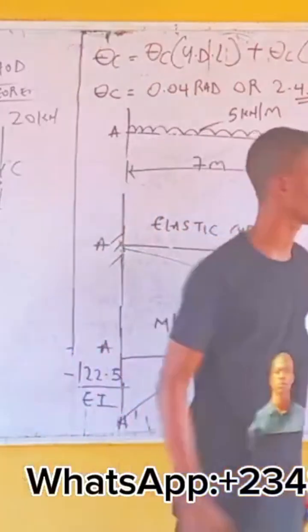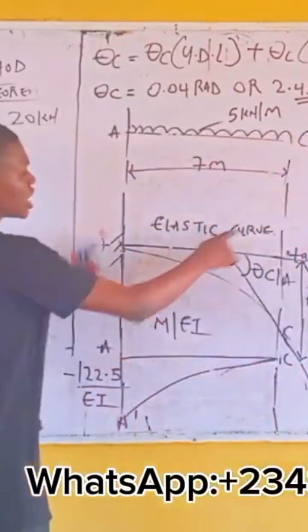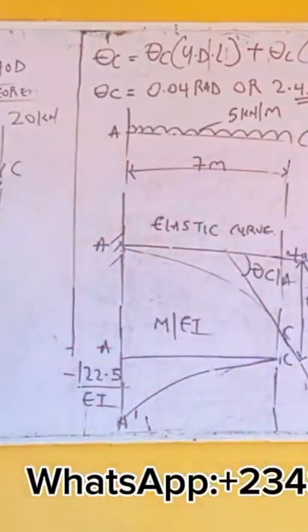Similarly to this place too, the vertical deviation is Tc to A. Now, I've gotten the area already. Meaning that Tc to A, which is...